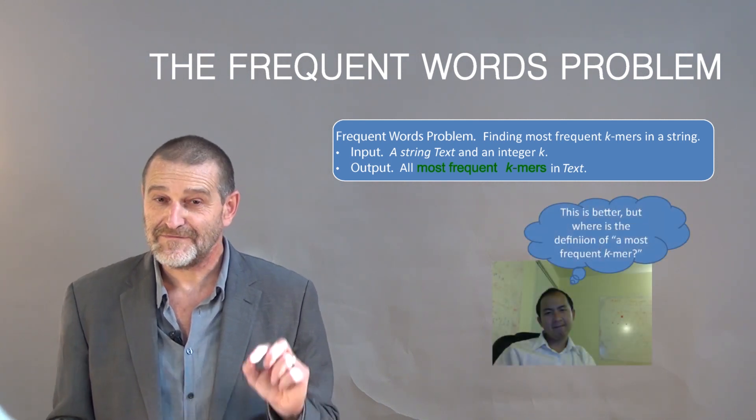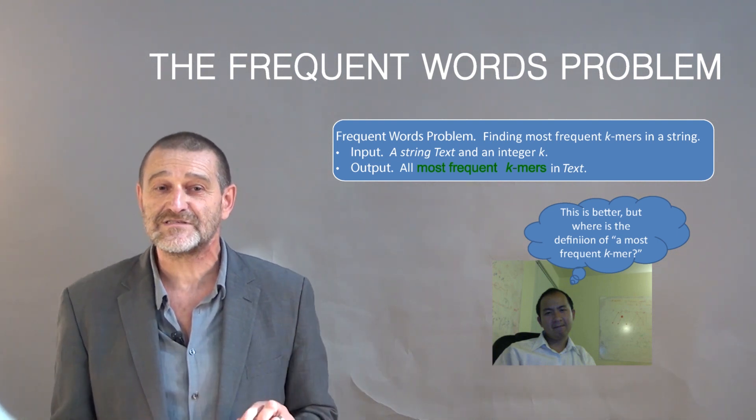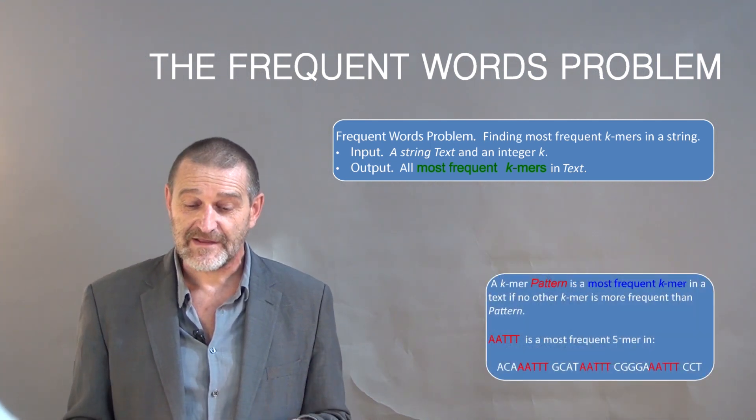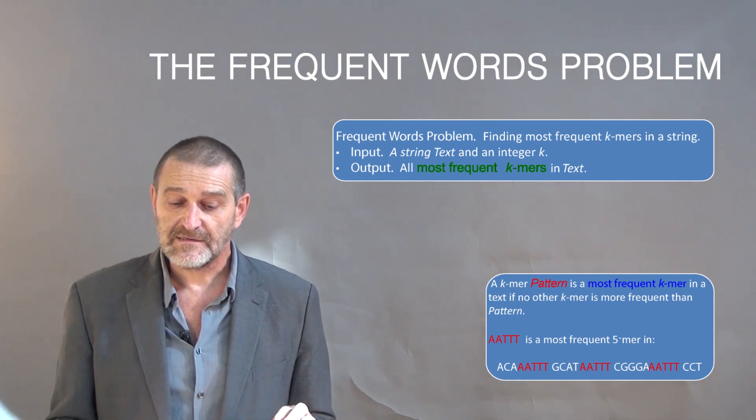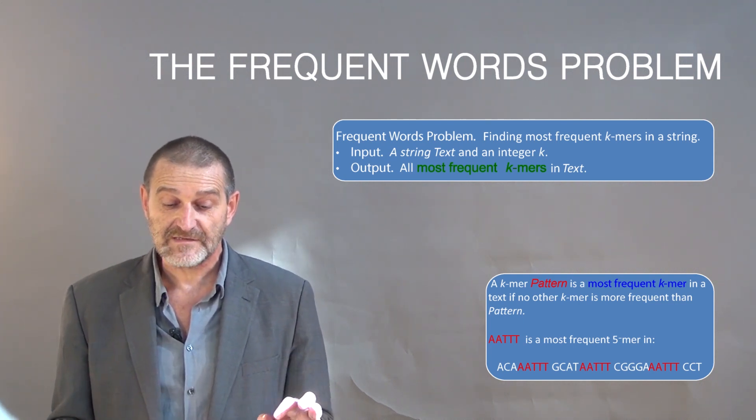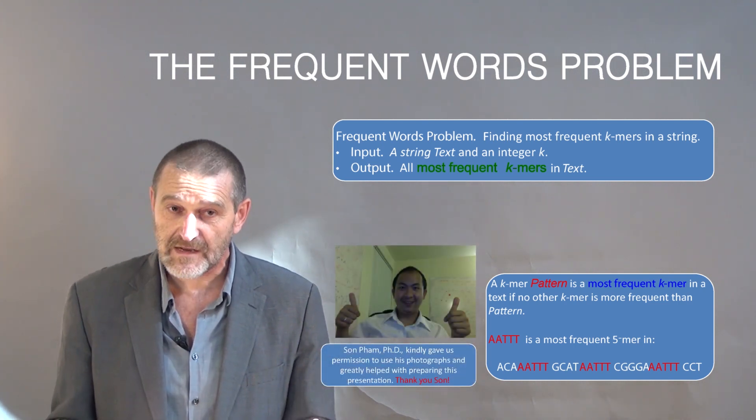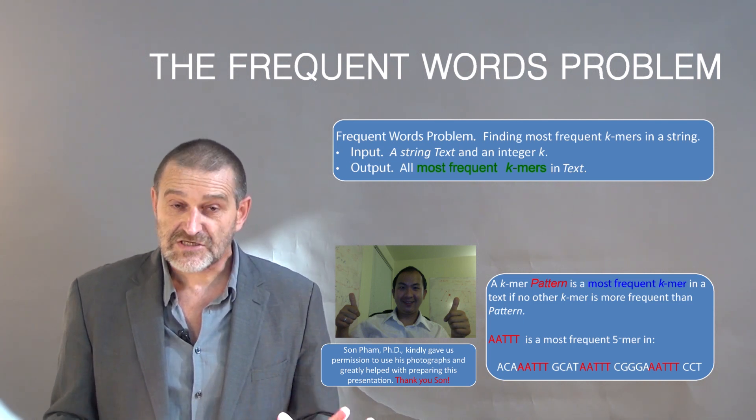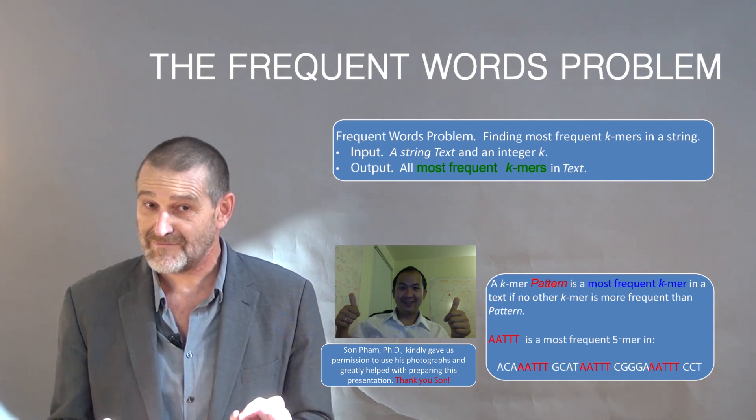Let's ask Sean. He feels better, but he's still not clear because he doesn't know what exactly the most frequent word means. I think he's a little bit picky today because it's easy to define what the most frequent word means. A k-mer, a string of length k, a k-mer pattern is the most frequent word in a text if no other k-mer is more frequent than pattern. And now even Sean is satisfied and I wanted to thank Sean for great help with the development of this lecture. Now, Sean is satisfied, but we should ask biologists whether this problem actually makes sense.